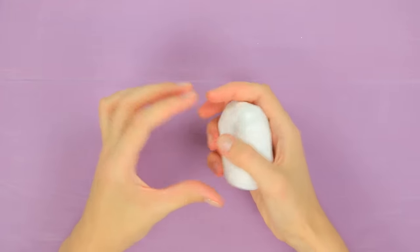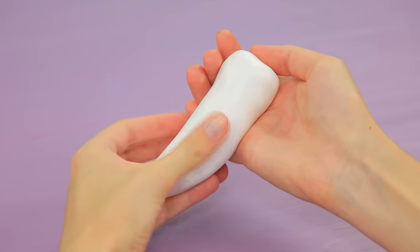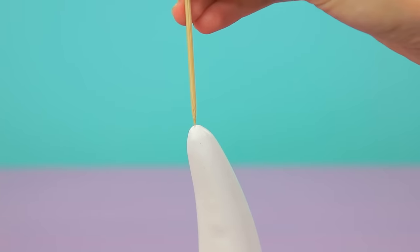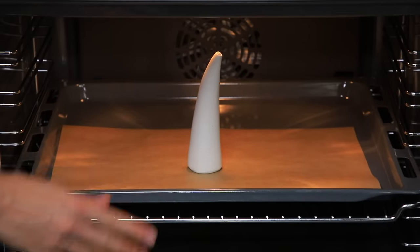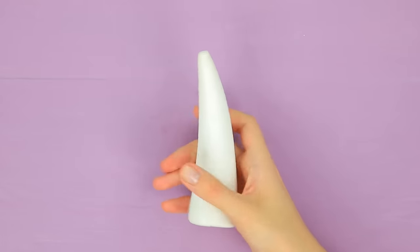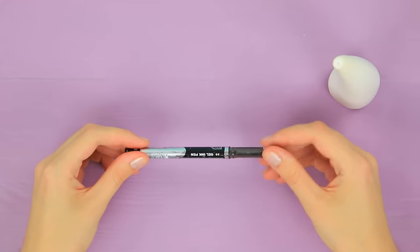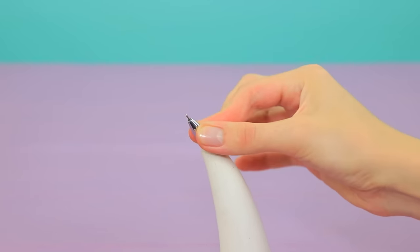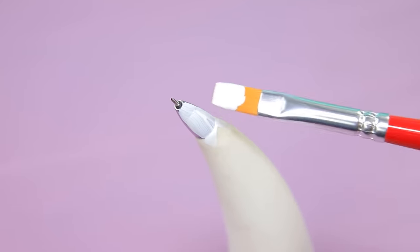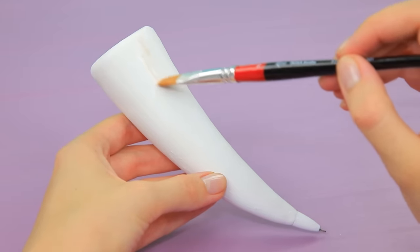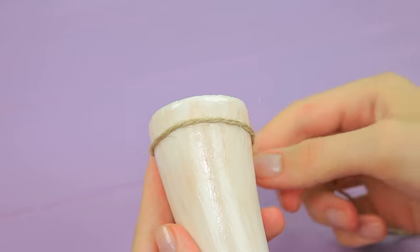Make a fang from polymer clay. Poke a hole with a wooden skewer. Bake according to the clay package instructions. Take a pen refill and tip out. Put it in the hole. Coat the fang with white acrylic paint. Add a layer of diluted beige paint. Wrap twine around the base.